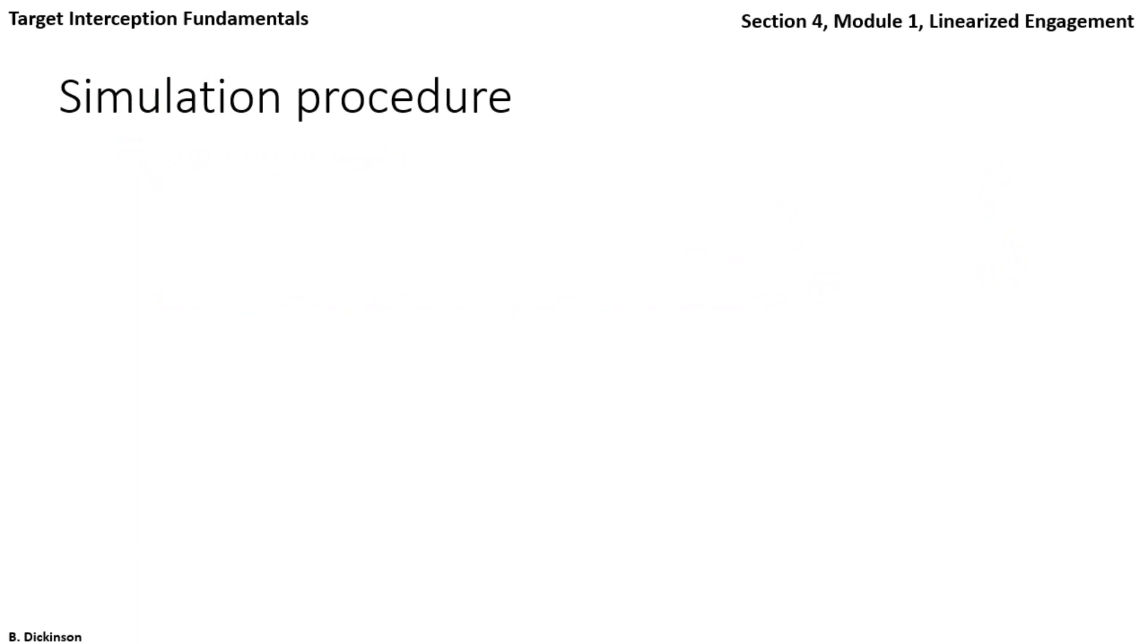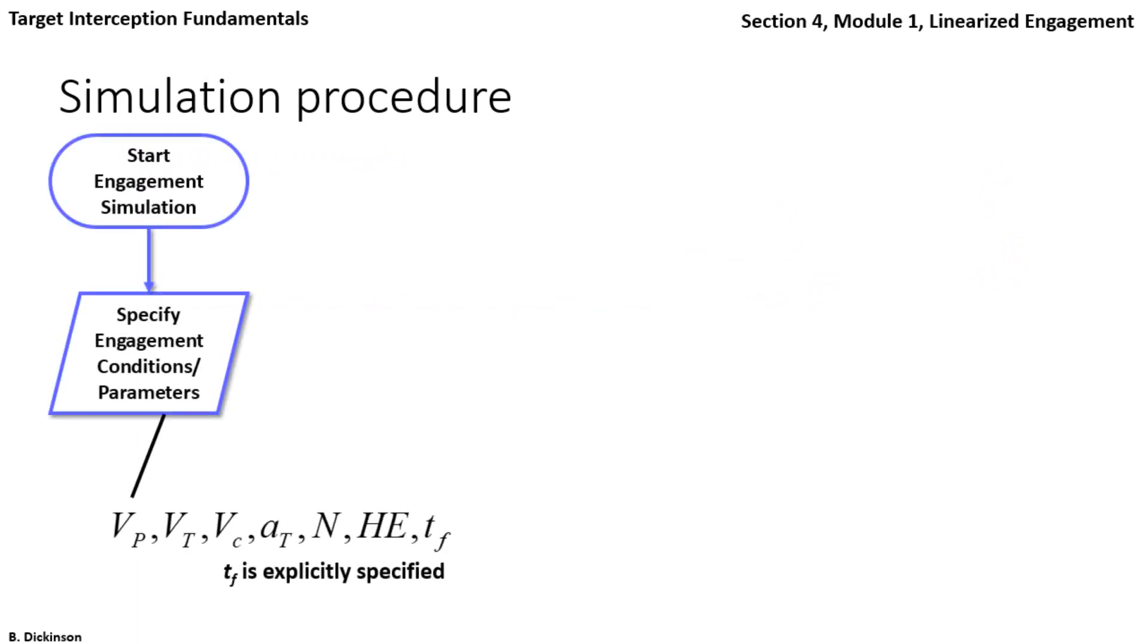Now the simulation procedure for the linearized engagement. We start by specifying velocities so we can determine closing velocity, target acceleration, if any, heading error, if any, navigation gain, and the final time. We then also specify kinematic initial conditions, so that's relative position and relative velocity in the vertical direction.